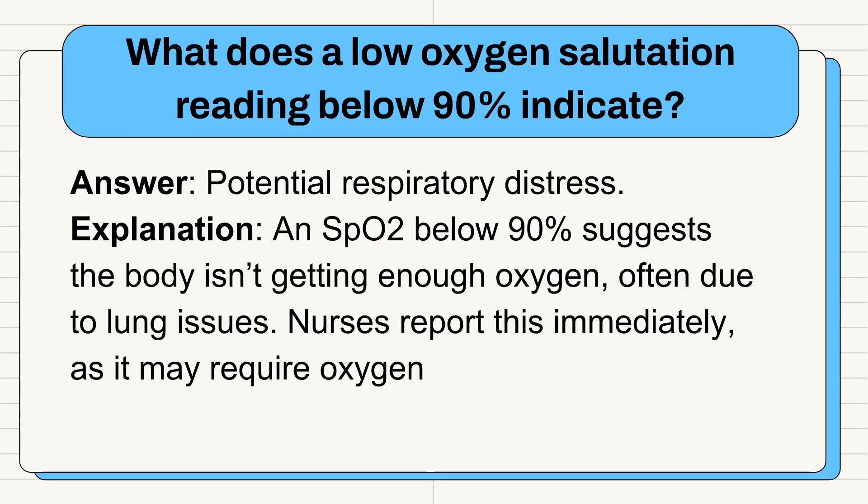Question 10: What does a low oxygen saturation reading below 90% indicate? Answer: Potential respiratory distress. An SpO2 below 90% suggests the body isn't getting enough oxygen, often due to lung issues. Nurses report this immediately, as it may require oxygen therapy or further tests.